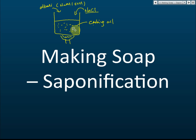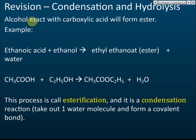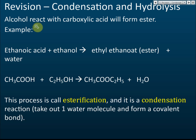Now, chemically, what happens to the cooking oil, alkali, and sodium hydroxide? Before we discuss soap-making in detail, let's revise condensation reactions and hydrolysis reactions. You learned condensation in Form 4 and hydrolysis in Form 5 Carbon Compounds. In Chapter 2 Form 5, we learned that alcohol reacts with carboxylic acid to form an ester. For example, ethanoic acid reacts with ethanol to produce ethyl ethanoate.